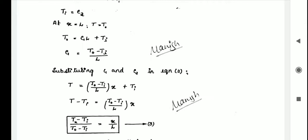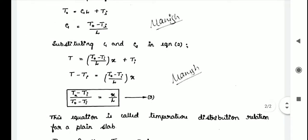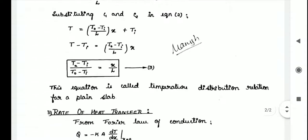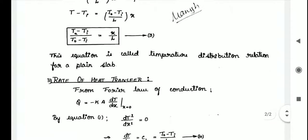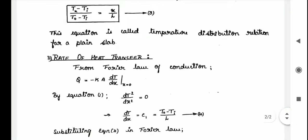Substituting C1 and C2 into equation 2, we get T − Ti = [(To − Ti) / l] · x, or equivalently (T − Ti) / (To − Ti) = x / l, labeled as equation 3. This is called the temperature distribution relation for a plane slab.